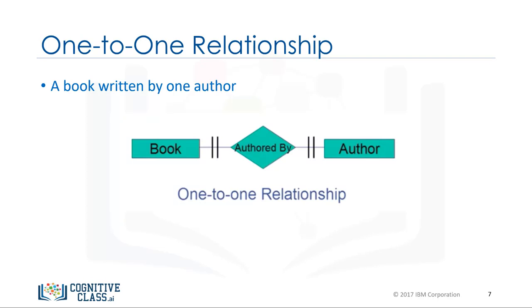This is called a one-to-one relationship. Only entities are used in the relationship diagrams. Attributes are omitted because they can clutter the diagrams.